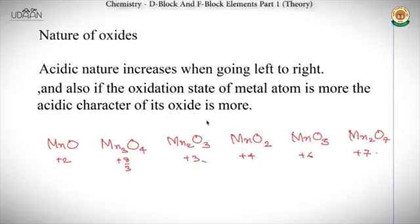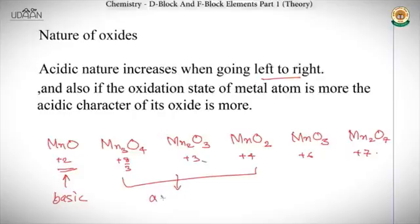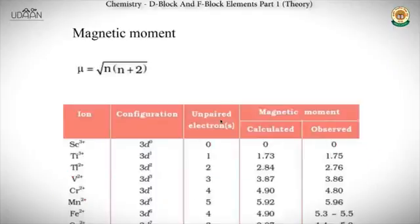Regarding the nature of oxides along the period: acidic nature increases going from left to right (Sc to Zn), while basic nature decreases. Behavior differs when oxidation states are different — for example, in the manganese oxide series, MnO is basic, Mn₃O₄ to MnO₂ are amphoteric (showing both acidic and basic characteristics), and higher oxides like Mn₂O₇ are acidic. Generally, as the oxidation state of the metal atom increases, acidic character also increases.